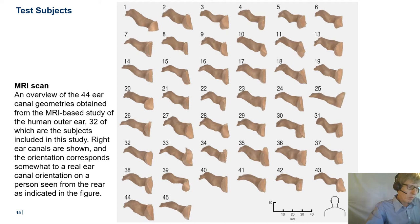Detailed information about the full ear canal geometry of all test subjects was available from a larger in vivo MRI-based study of the human outer ear — the first of its kind to our knowledge. The anatomy of the ear canal from the bottom of the concha to the eardrum of 44 adult subjects has been accurately retrieved, 32 of which are the subjects included in this study. You can even note the protruding part of the eardrum where the malleus bone is connected behind the eardrum.